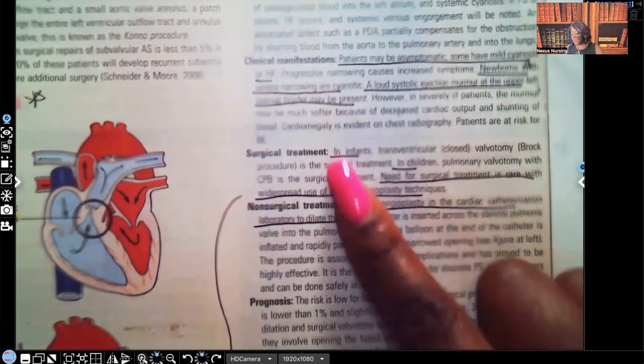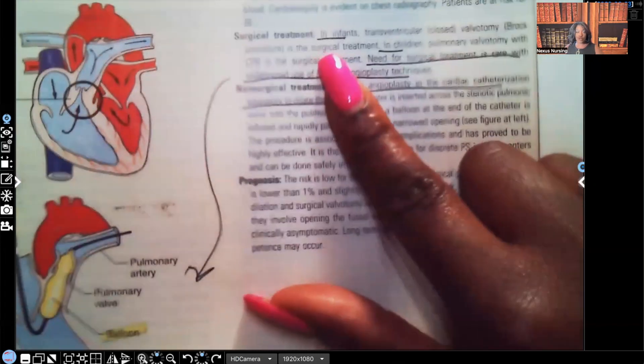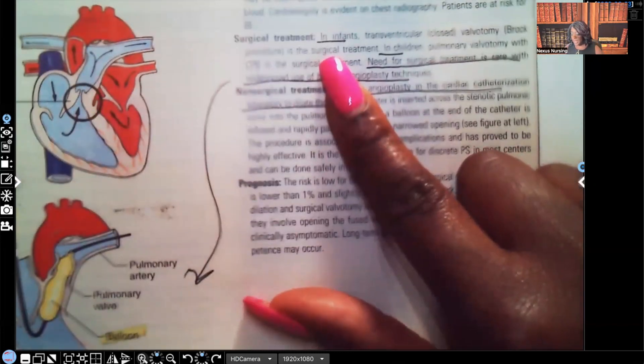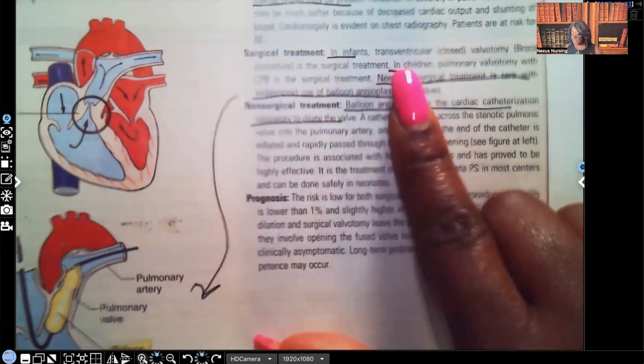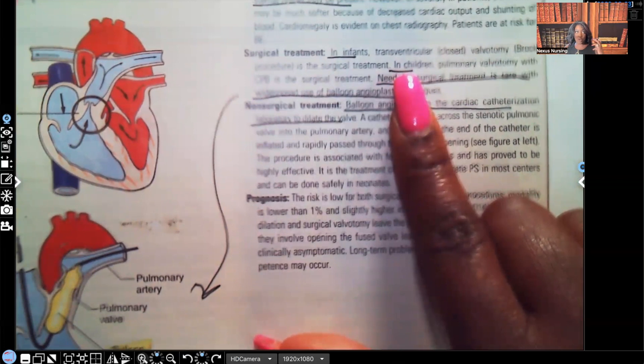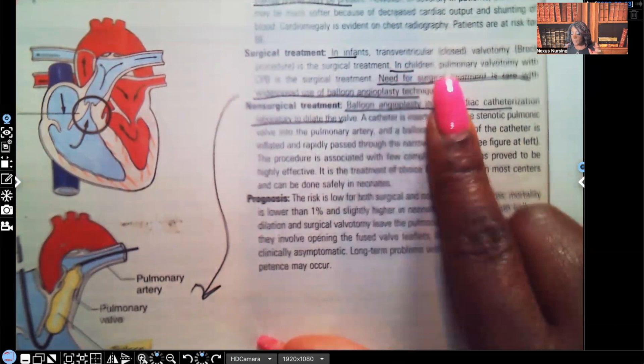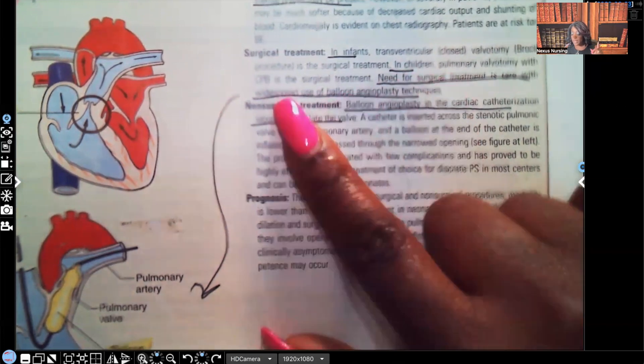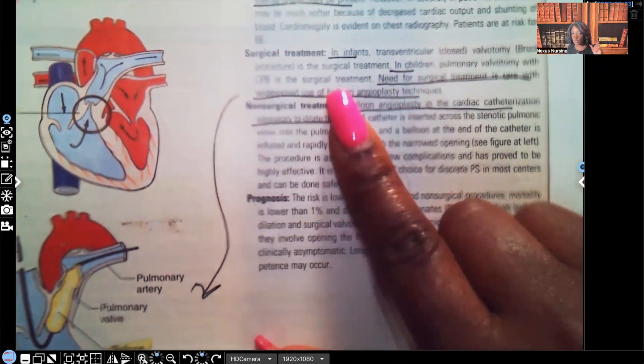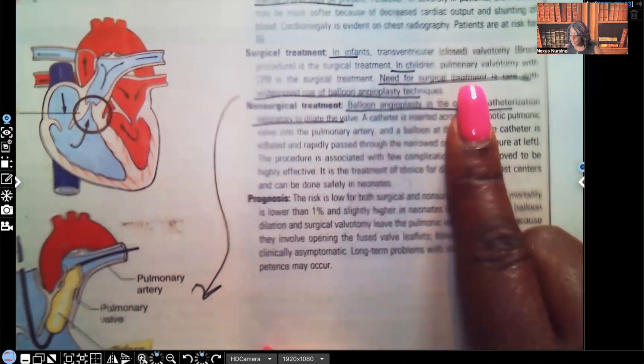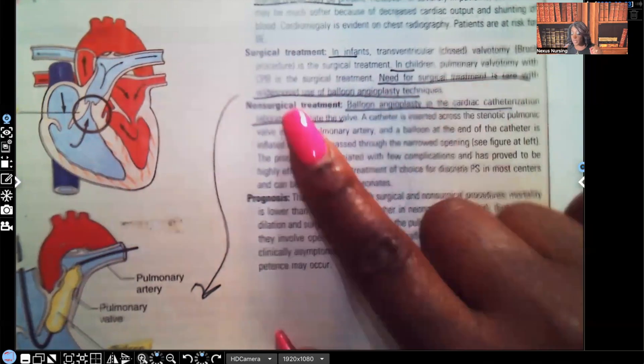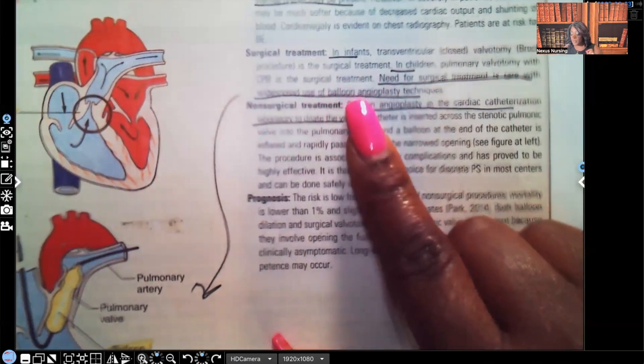Pulmonic stenosis—that's what you need to be thinking of. Moving on to surgical treatment: what are we doing for these patients? In infants, they may do a closed valvotomy. In children, pulmonary valvotomy with CPB is a surgical treatment option.